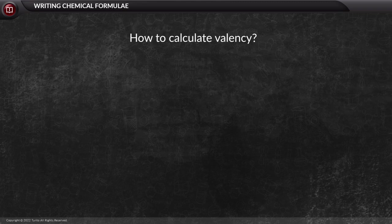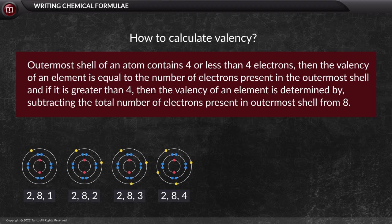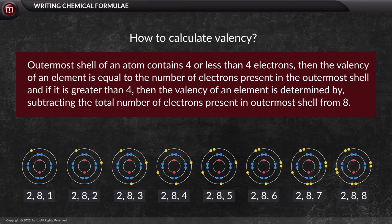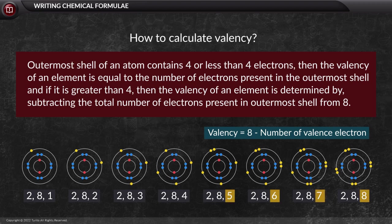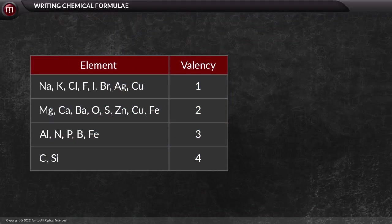Mathematically, we can say that if the outermost shell of an atom contains 4 or less than 4 electrons, then the valency of an element is equal to the number of electrons present in the outermost shell, and if it is greater than 4, then the valency of an element is determined by subtracting the total number of electrons present in the outermost shell from 8.